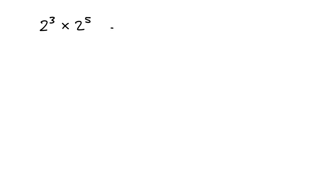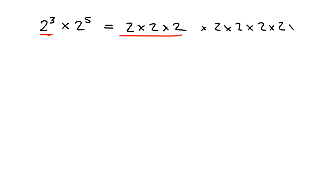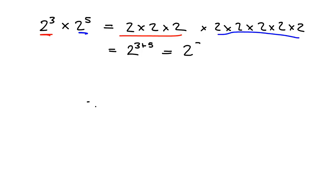Let's have a look at what this means. 2 to the 3 is 2 times 2 times 2 — that is your 2 to the 3. And 2 to the 5 is 5 of those 2's all multiplied together. Now, if we wanted to write it as a single power, we need to figure out how many 2's there are. You had 3 of them here and another 5 over here, so in total you have 8 of those 2's. So it's 2 to the power of 8.